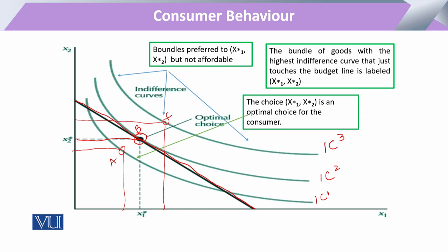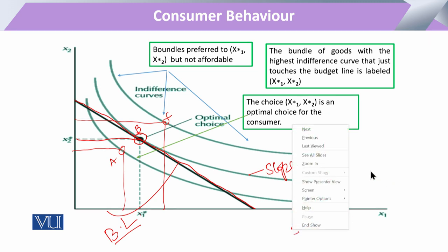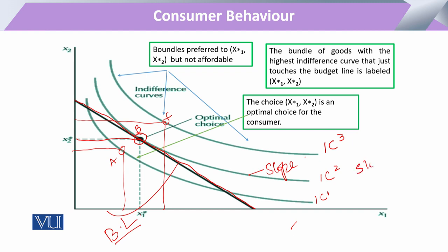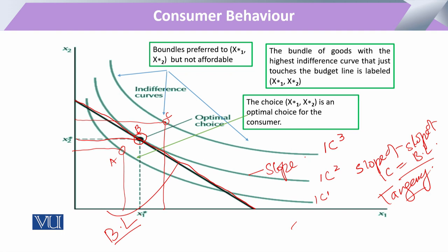For utility maximization, the consumer will prefer the bundle that gives maximum utility within available resources. We can assess the slope of the indifference curve and the slope of the budget line. When the slope of these two curves becomes tangent to each other, the slope of the indifference curve equals the slope of the budget line. This point of tangency provides the consumer with maximum utility.